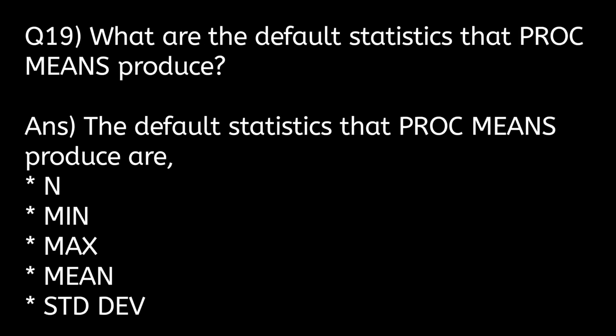What are the default statistics that PROC MEANS produces? The default statistics that PROC MEANS produces are N, min, max, mean, and standard deviation.